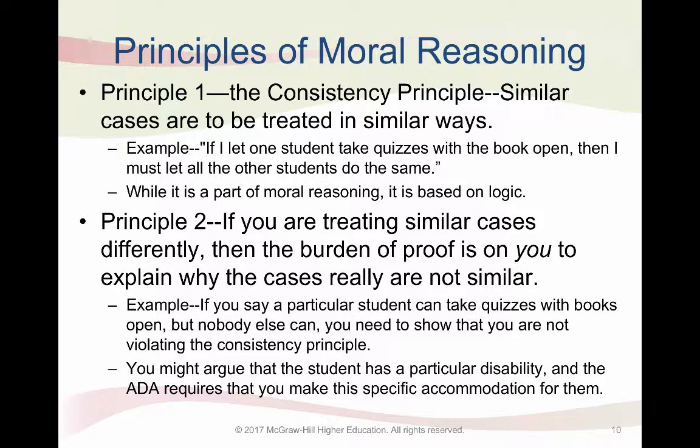Sometimes people's explanations of why cases are not similar may be more complicated. For instance, what about a baker who refuses to make a cake for a same-sex couple's wedding? They make cakes for every other couple's wedding. Does their argument that their religion forbids it pass this test? This example shows how difficult meeting this principle can be, and is something we'll discuss later in the chapter when we talk about different perspectives in moral reasoning.